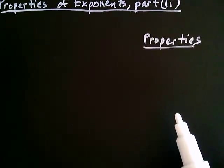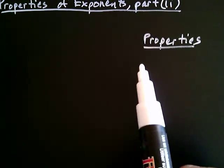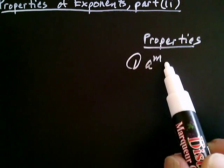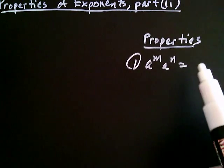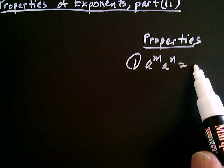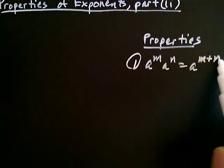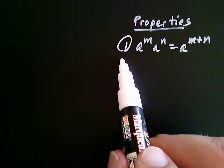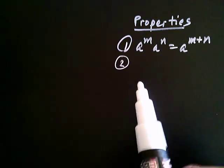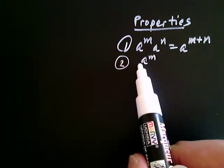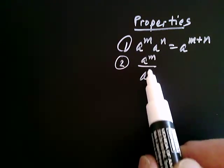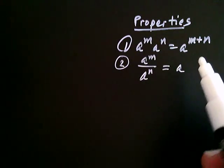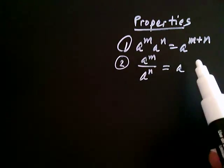The first property was that when you take a to the m and multiply it by a to the n, you add the exponents — so you get a to the m plus n. The second property was for division: when you have a to the m divided by a to the n, you subtract the exponents, so it's m minus n.